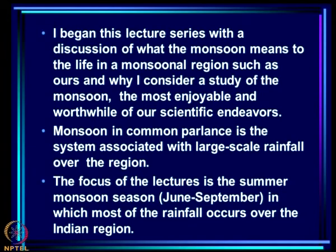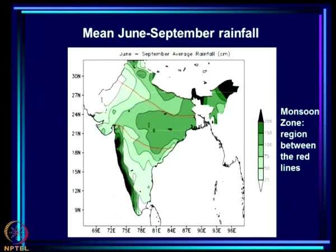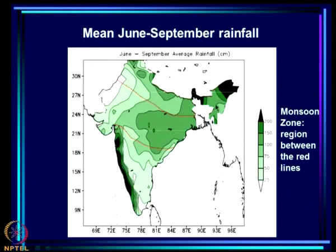Monsoon in common parlance is the system associated with large scale rainfall over the region. The focus of the lectures is the summer monsoon season, June to September, in which most of the rainfall occurs over the Indian region. This is the pattern of rainfall over the Indian region and this is the monsoon zone where the large scale monsoon system gives rainfall during the season — associated with orography on the west coast and northeast also.